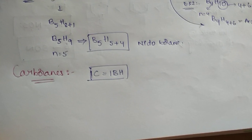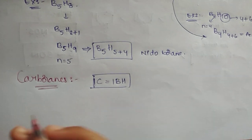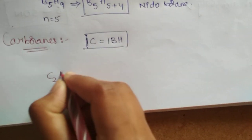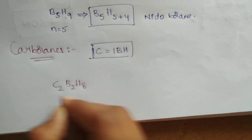So first of all, when they give C2 B2 H8, we have to convert this, substitute this.